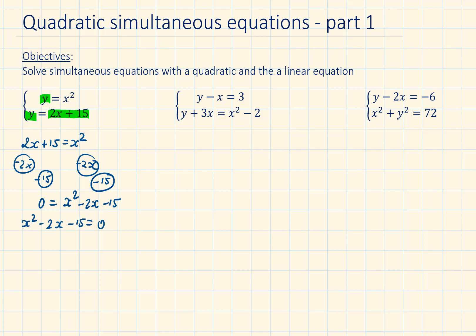It looks like this equation can be factorized. Next, we can write down the factors of minus 15: minus 1 and 15, minus 3 and 5, 1 and minus 15, 3 and minus 5. From these four factor pairs, we are going to choose the one that has a sum of minus 2, and that is 3 and minus 5.